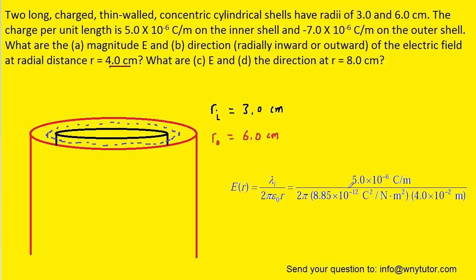So here we have plugged in the linear charge density of the inner cylindrical shell. The value of epsilon is given with its standard unit, and we're calculating the electric field at a distance of 4 centimeters. When we simplify that, we can see that the magnitude of the electric field is 2.3 times 10 to the sixth newtons per coulomb.